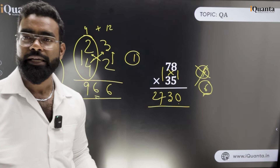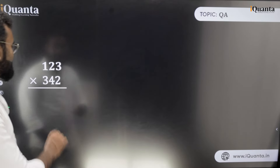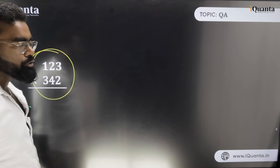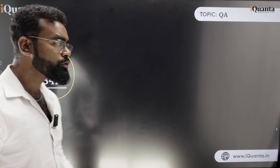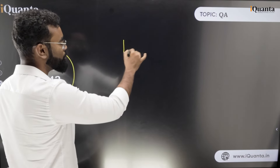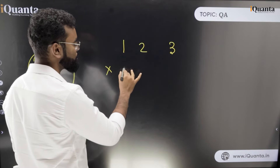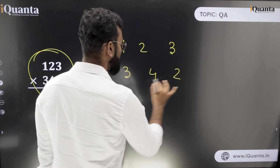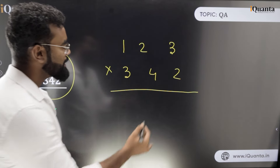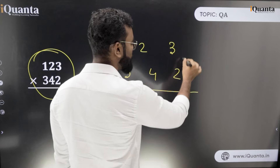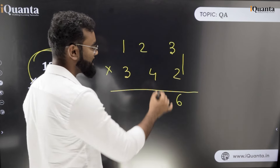Now let's think about multiplication of three-digit numbers. This is a bigger number — 123 into 342. Let's carefully go through it. The first step is 2 into 3, which is 6.